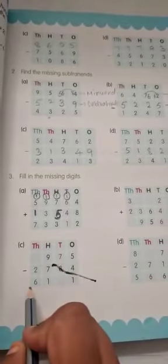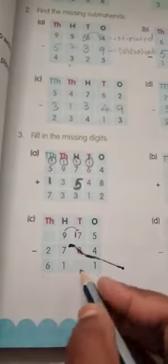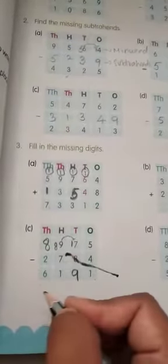5 plus 4 is 9 — we have to find the missing one. They have given here 975 minus 2,784, and we got the result 6,101. So 7 minus 8 we cannot do, so we have to take a borrow. It will become 17. 17 minus 8 is 9. This will become 8. 8 minus 7 is 1. 8 minus 2 is 6. So these are the missing digits.